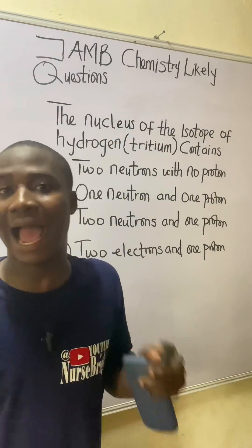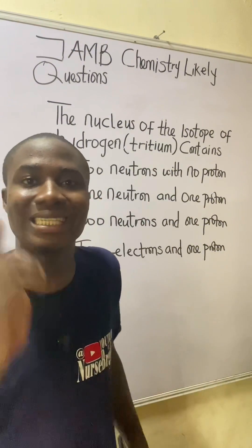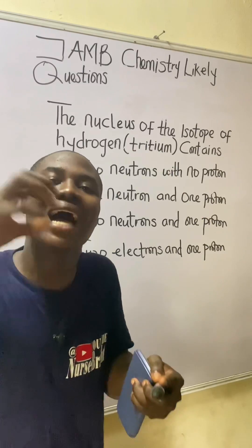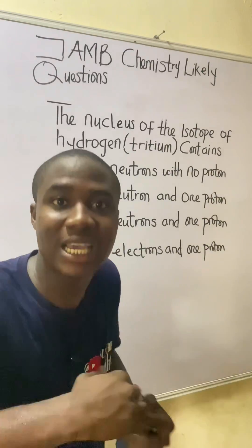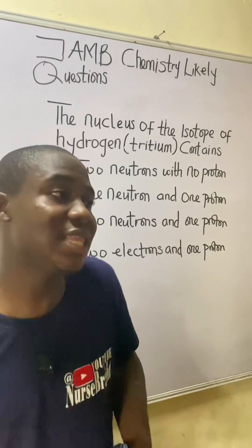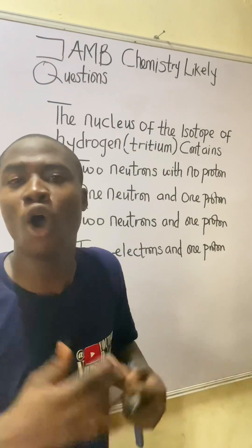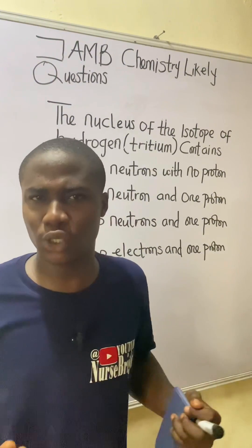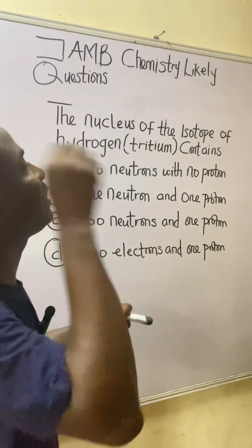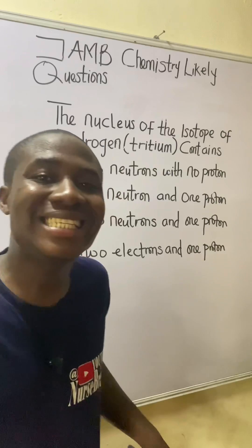Among these three isotopes, it must be noted that it is tritium that is radioactive in nature, meaning it has the ability to emit radiations. These radiations can be alpha radiation, beta radiation, or even gamma radiation. In this practice question, they are asking us to determine what should be inside the nucleus of tritium.